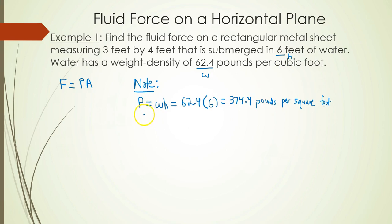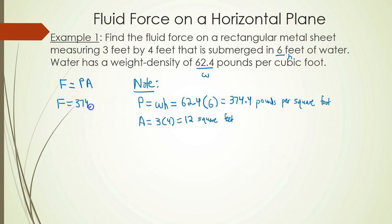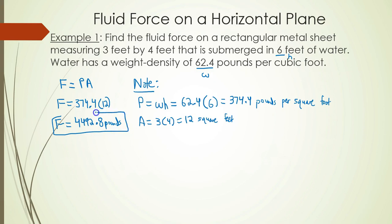The only other thing we need is the area. The area A of this rectangular sheet is simply 3 times 4, which equals 12 square feet. So the fluid force on this horizontal plane is 374.4 times 12, which comes out to 4,492 pounds.